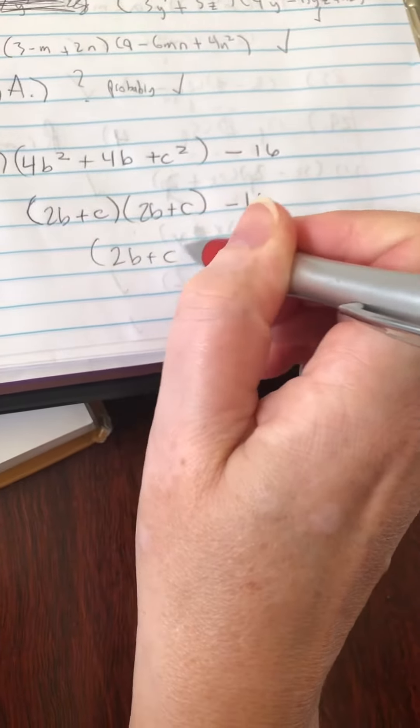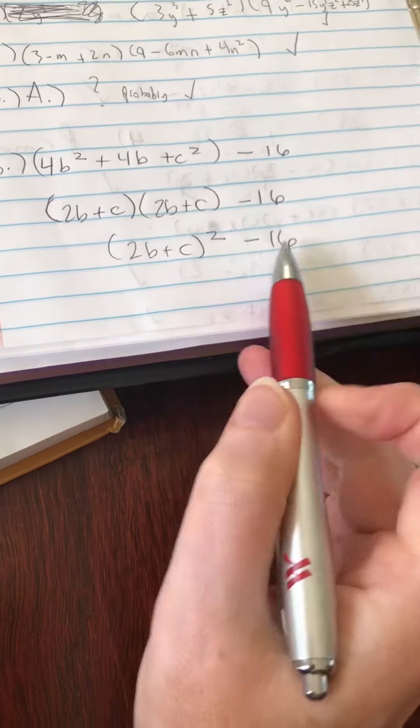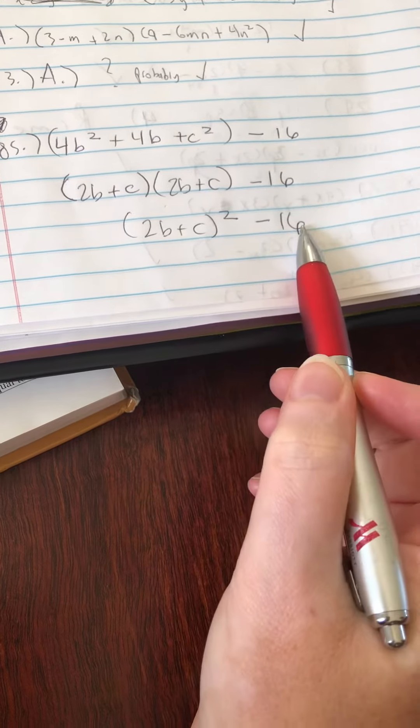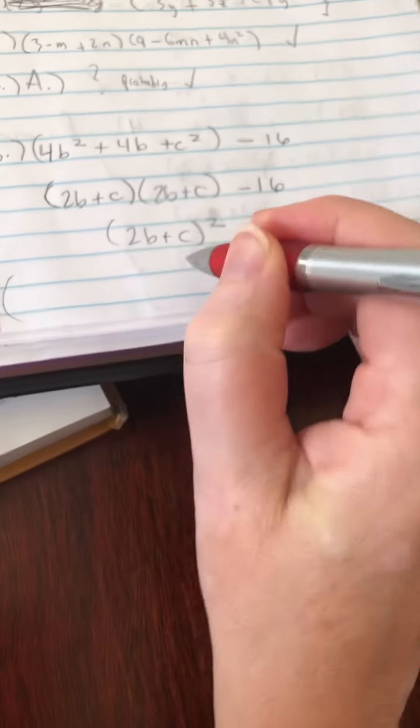So that's 2b plus C squared minus 16. Now what is this? The difference of squares. So we can factor this as the difference of squares.